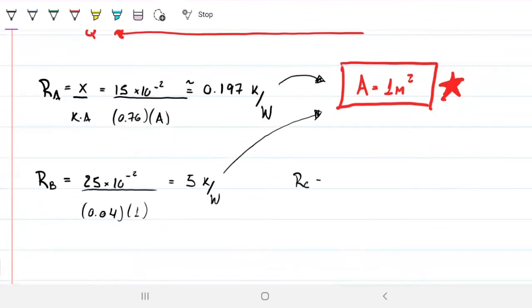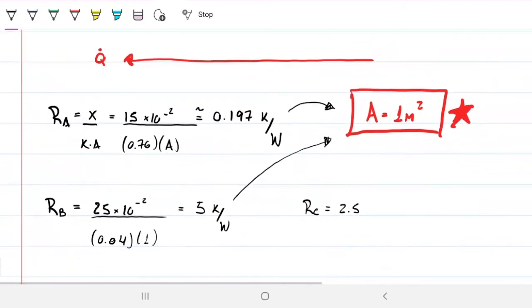And then my RC. I'll just put it here in the corner. Same idea, but now I have 2.5. So it's 2.5 centimeters. So times 10 to the minus 2. And I'm dividing that by my 0.15, which is the K for the wood. And once again, 1 as per our assumption. So this gives me about approximately 0.167. Same thing, Kelvin per watt with the caveat that is related to this.